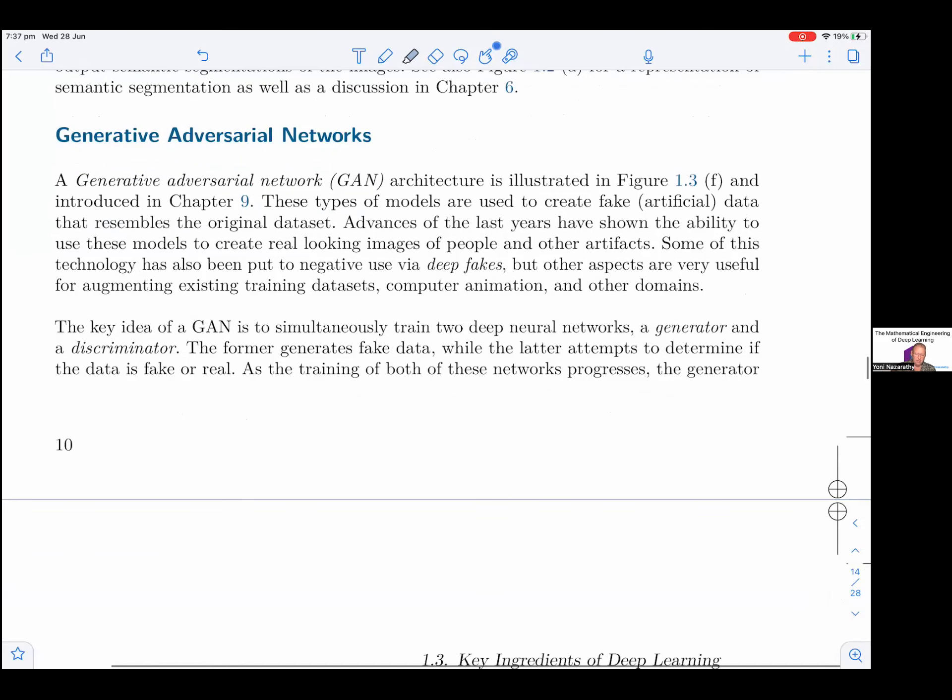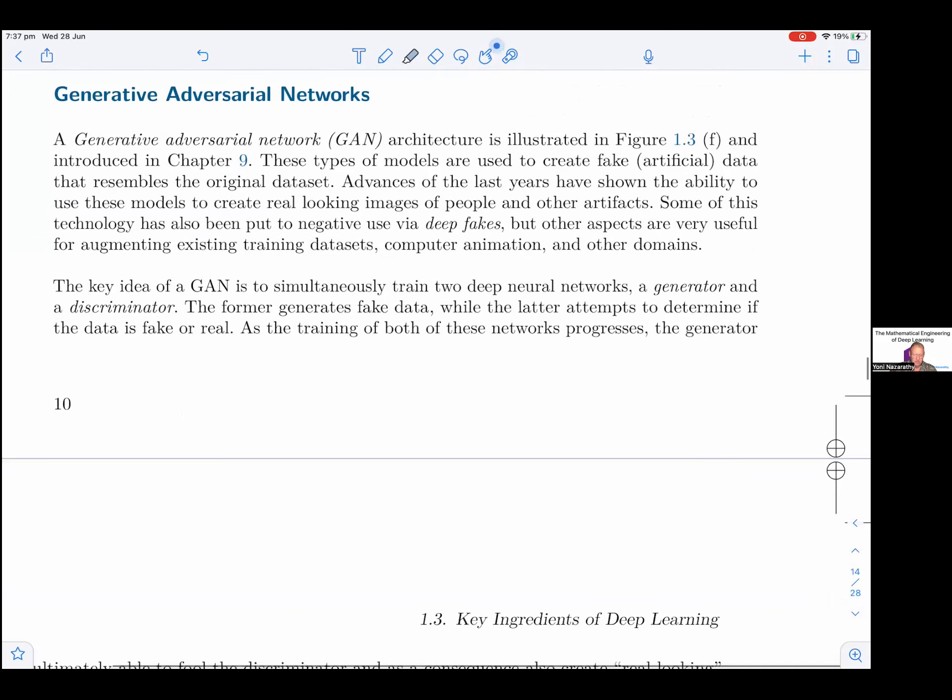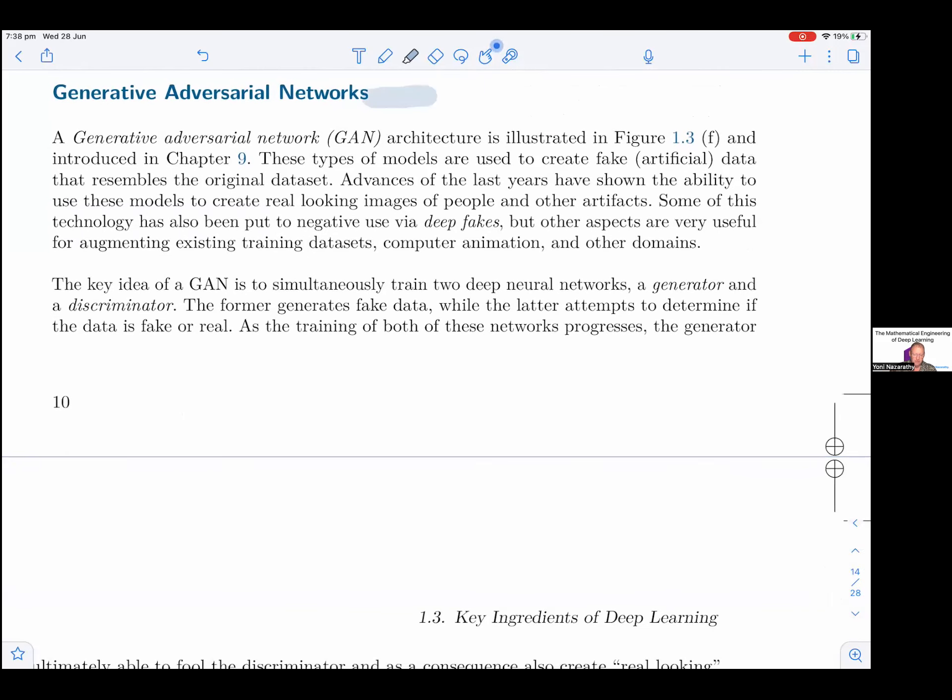Generative adversarial networks. A generative adversarial network GAN architecture is illustrated in figure 1-3-F and introduced in chapter 8. These types of models are used to create fake artificial data that resembles the original data set.